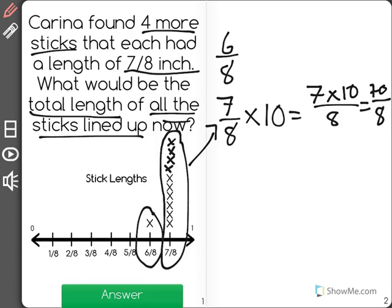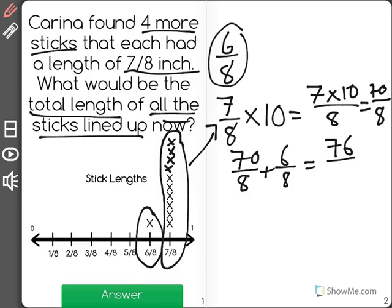Now we have to remember to add in the 6 eighths as well, so 70 over 8 plus 6 over 8. Remember your denominator stays and you add the numerators? It's 76 eighths.